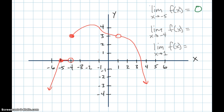If I try negative 4: as X approaches negative 4 from the left side we're getting closer and closer to 0, but as X approaches negative 4 from the right side we're getting closer and closer to positive 3. From the left we're approaching 0, from the right we're approaching 3 — this limit does not exist, because we're approaching different values from the left and the right.